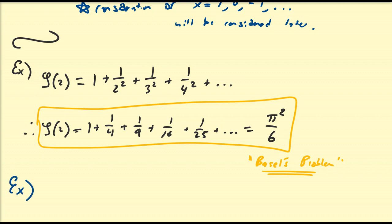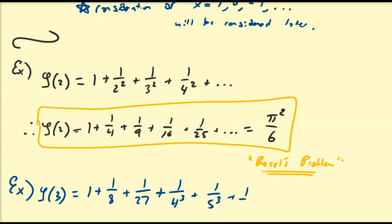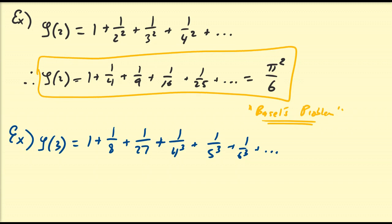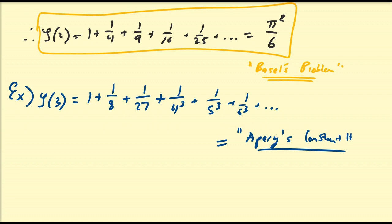Another example is zeta of 3, which is the sum of reciprocal cubes: 1 plus 1 over 2 cubed, plus 1 over 3 cubed, which is 27, plus 1 over 4 cubed, plus 1 over 5 cubed, plus 1 over 6 cubed, and so on. There is currently no closed-form representation for zeta(3) like zeta(2) has, so it remains an open problem. This is referred to as Apéry's constant, named after a French mathematician. Zeta(2), zeta(3), zeta(5), and so on are all constants.